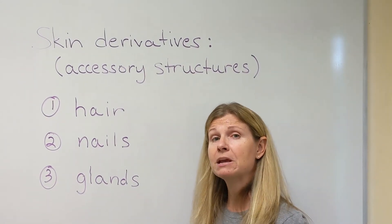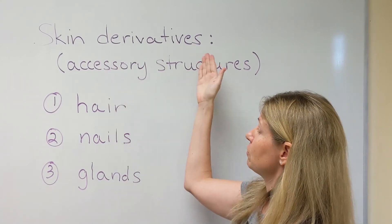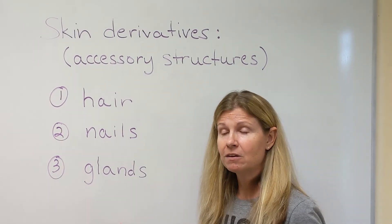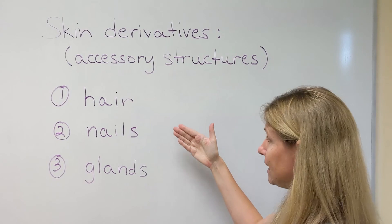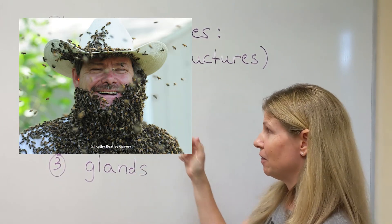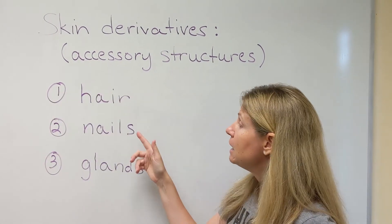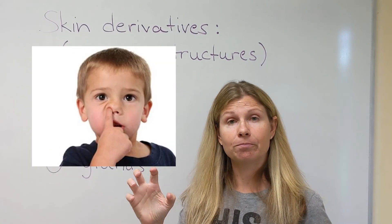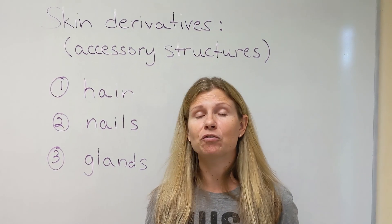Recalling from the beginning, the components of the integumentary system are the skin and the accessory structures — skin derivatives such as hair, nails, and glands. We spoke about the sebaceous glands and sweat glands. Hair plays an important role beyond looking pretty — it can help cushion from impact, gives sensory input, and our nose hairs help filter the air we breathe. Nails provide protection and are also useful as tools. That wraps up our integumentary system and its components, how our skin functions and serves us. Thank you.